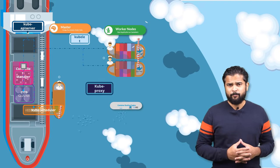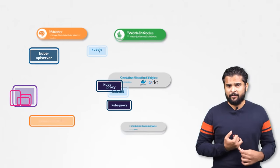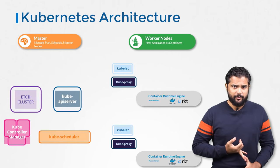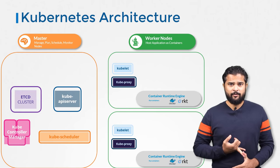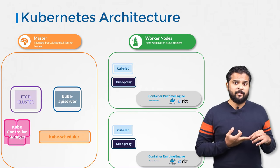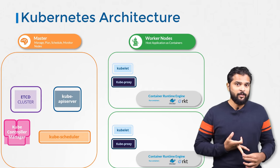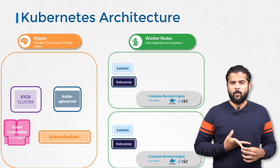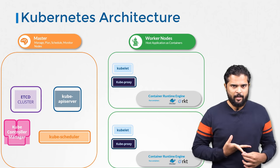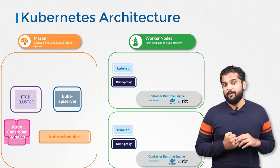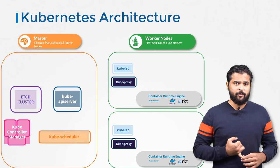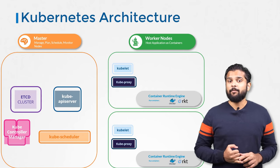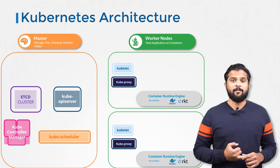So to summarize, we have master and worker nodes. On the master, we have the etcd cluster which stores information about the cluster. We have the kube scheduler that is responsible for scheduling applications or containers on nodes. We have different controllers that take care of different functions, like the node controller and replication controller. We have the kube API server that is responsible for orchestrating all operations within the cluster. On the worker node, we have the kubelet that listens for instructions from the kube API server and manages containers, and the kube proxy that helps in enabling communication between services within the cluster.